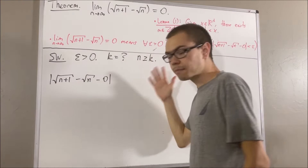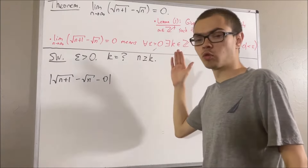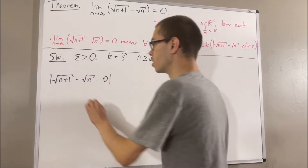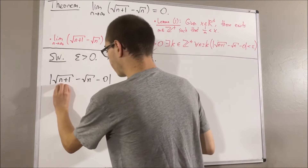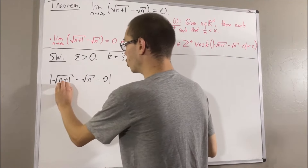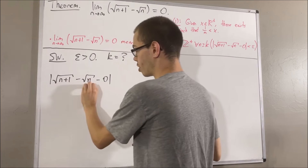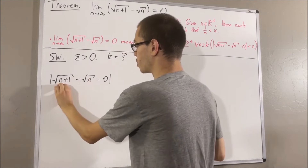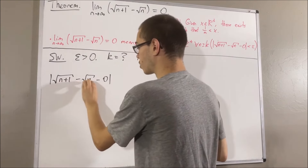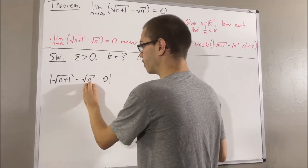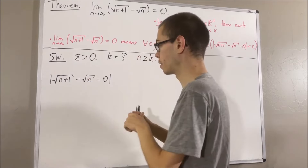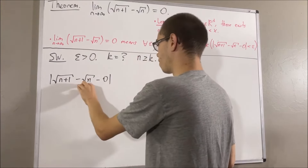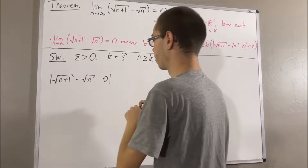To start, since n plus 1 is greater than n, of course the square root of n plus 1 is greater than the square root of n. So we must have that the square root of n plus 1 minus the square root of n is positive, meaning this entire expression is just equal to square root of n plus 1 minus the square root of n.